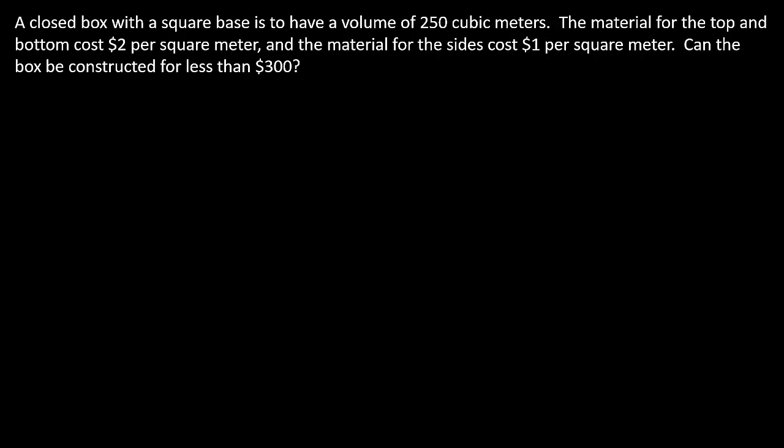Here we've got an optimization problem. A closed box with a square base is to have a volume of 250 cubic meters. The material for the top and bottom costs two dollars per square meter, and the material for the sides costs one dollar per square meter. They want to know: can the box be constructed for less than $300?